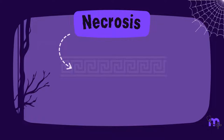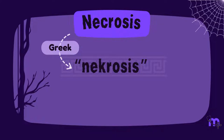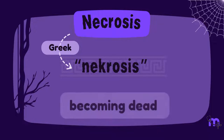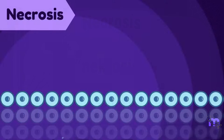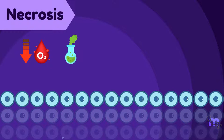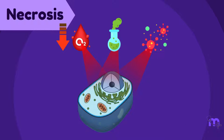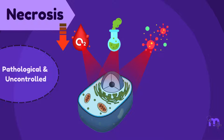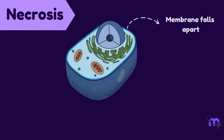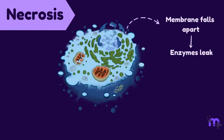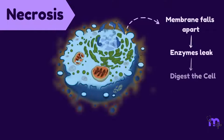The word necrosis is derived from the Greek word necrosis, meaning becoming dead. A severe injury like ischemia, toxin, trauma or infection kills the cell. It is a pathological and uncontrolled kind of cell death, in which the membranes fall apart, enzymes leak and digest the cell.